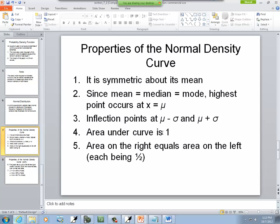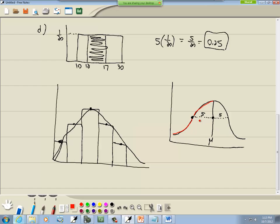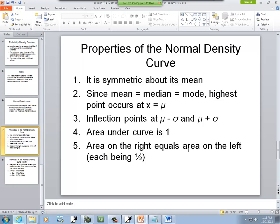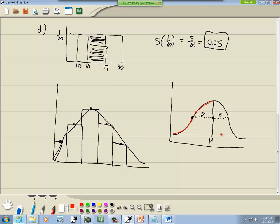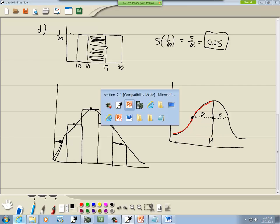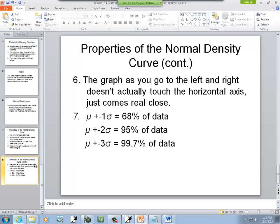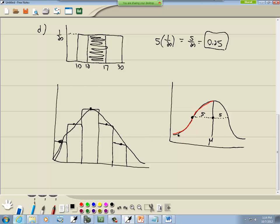Now the area under the curve is one. That's just what we've already said. All probability has to add up to one. Area on the right equals area on the left, each being one half. Well, if the total adds up to one, then this has to be one half or 0.5, and this has to be one half, 0.5. Now the graph, as you go to the left and right, doesn't actually touch the horizontal axis, just comes real close. So this is continuous. It keeps going, going on here. Just gets real close.